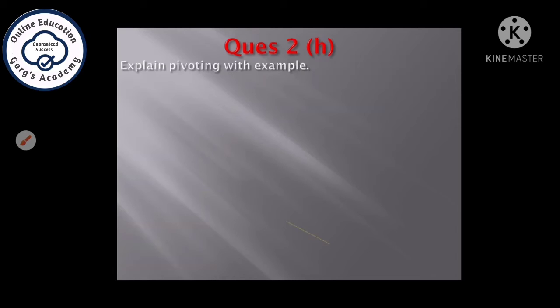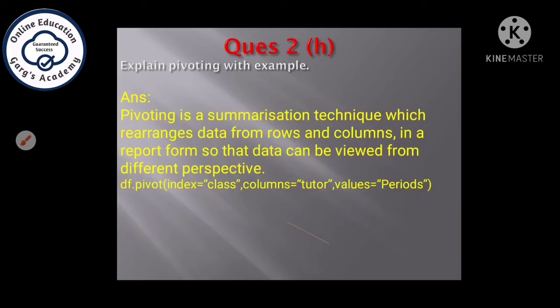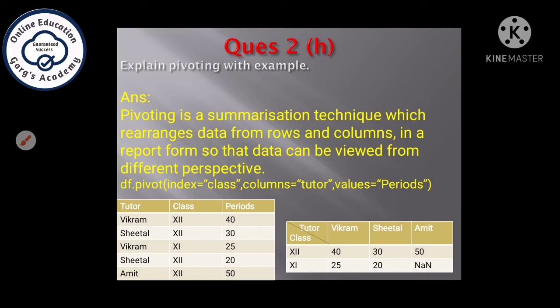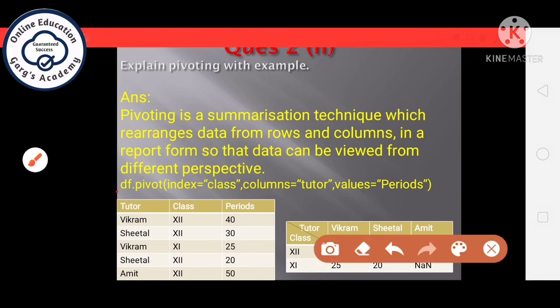Next question, second H part. Explain pivoting with example. This is the most confusing question for students, but it's very easy. It is a summarization technique which rearranges data from rows and columns in a report form so that data can be viewed from different perspective. Now, see how different perspective. Suppose, I have a data frame. There are 3 tutors, Mr. Vikram, Ms. Sheetal and Mr. Amit, who is taking the classes plus 2 and plus 1 and their number of periods are given in this form. If there are only 2 classes or 3 tutors, then it is very easy to check which tutor is taking which classes and how many number of periods. But, if number of tutors are more and number of classes are more, it is very difficult to find immediately how many teachers are taking how many classes and how many number of periods. So, if we want the result in this form, we can write the pivot function in this way.